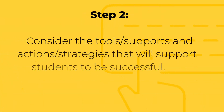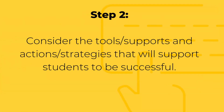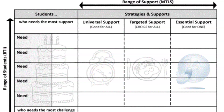Step 2: Consider the tools or supports and actions or strategies that will support students to be successful. Using this planning guide, we can see that if we think about all the needs in our spaces on the vertical axis and the supports we can offer on the horizontal axis, we can visually see where students fall and the level of strategies and supports needed.